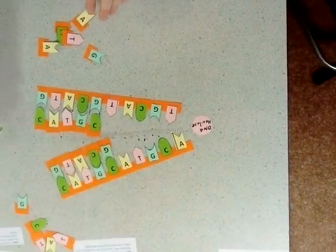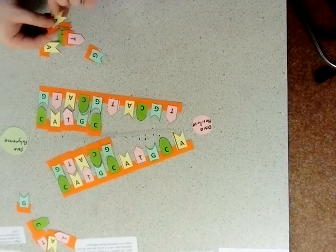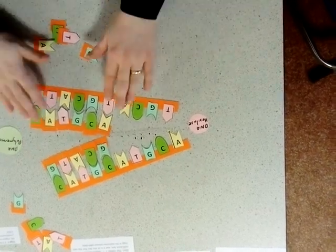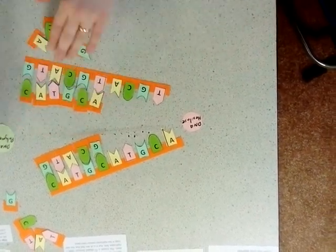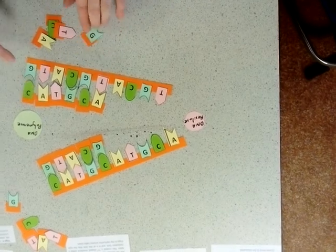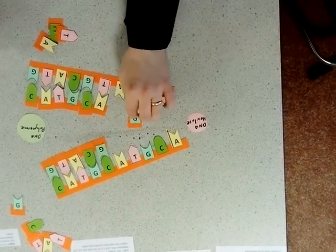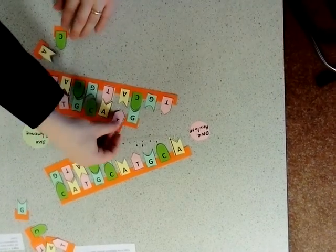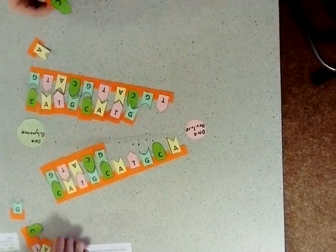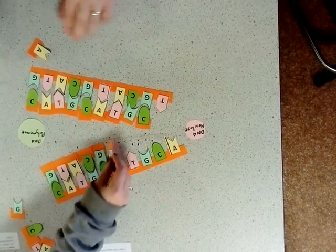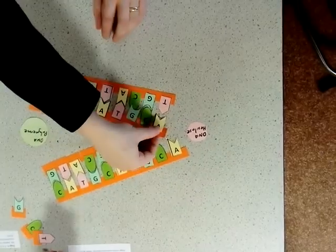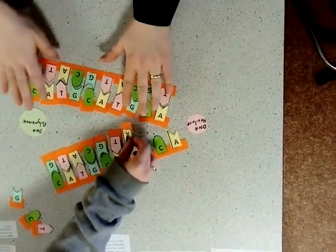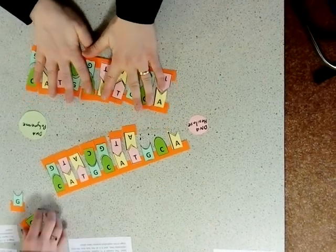DNA polymerase will move down and join up the individual base pairs by condensation reactions. In a condensation reaction, one molecule of water is being removed each time, which joins the two nucleotides together, until you have two complete copies of our DNA.